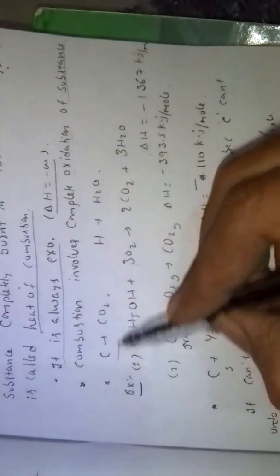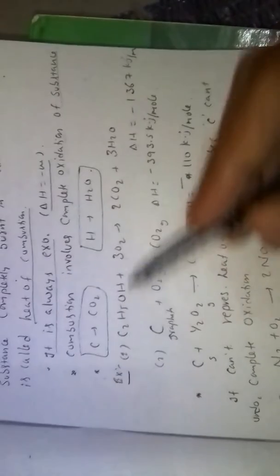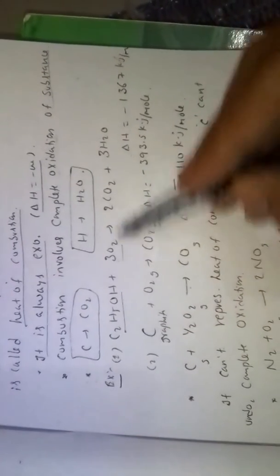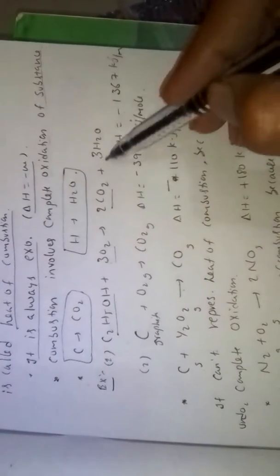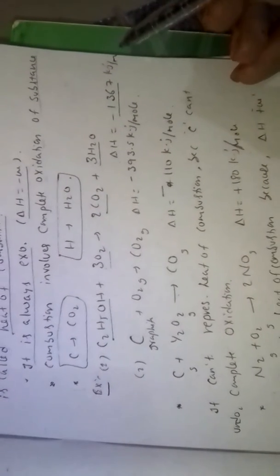For example, carbon is converted to CO2, hydrogen converted to H2O. Ethyl alcohol on combustion forms carbon dioxide and water, delta H value minus 1367 kilojoules per mole.